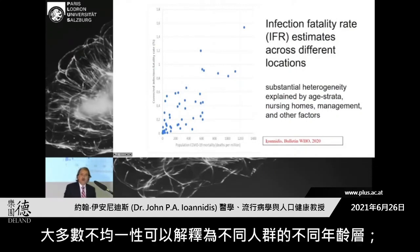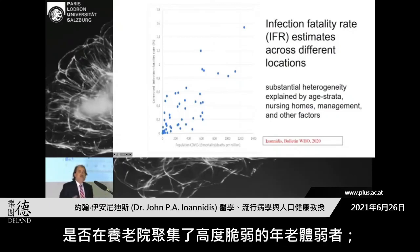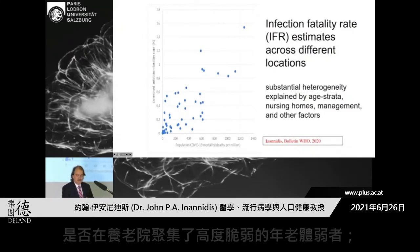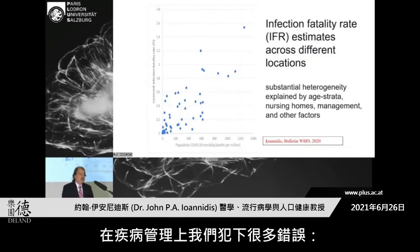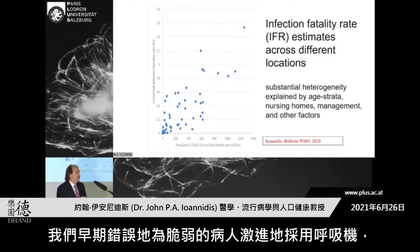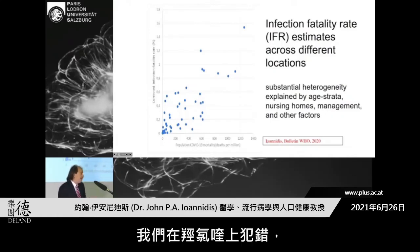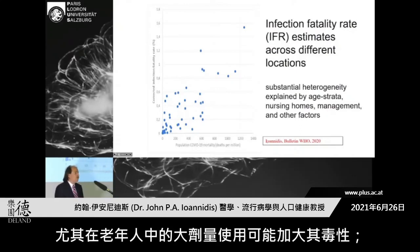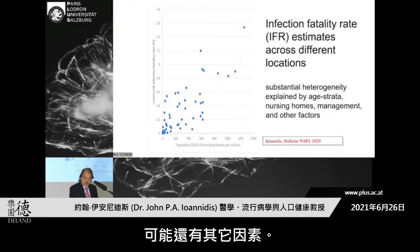Most of that heterogeneity can be explained away by differences in the age strata of different populations, by whether there are nursing homes with clustering of highly vulnerable elderly frail individuals, and the management of the disease. We made a lot of errors — errors in ventilation early on with very aggressive ventilation of very frail patients, errors with hydroxychloroquine, which was apparently more toxic especially in high doses in elderly individuals, and probably other factors.